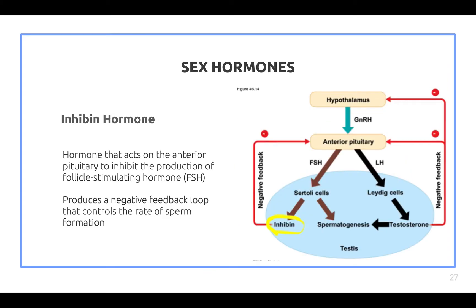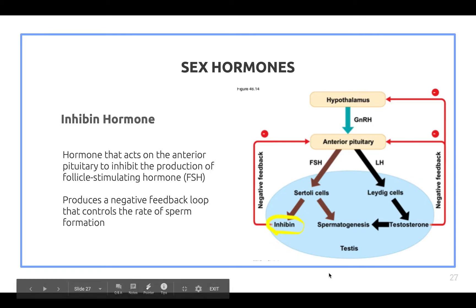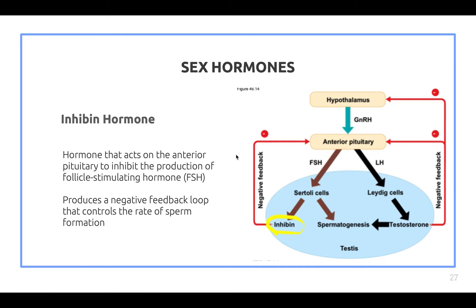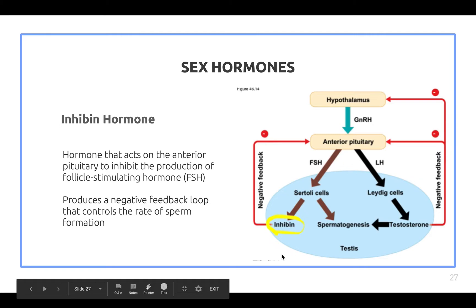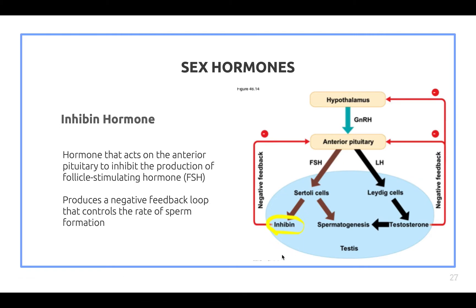The inhibin hormone acts on the anterior pituitary to inhibit the production of FSH and produces a negative feedback loop that controls the rate of sperm formation. The diagram provided here illustrates the negative feedback loop involved in the hormonal regulation of the male reproductive system, which will be discussed later in the presentation.